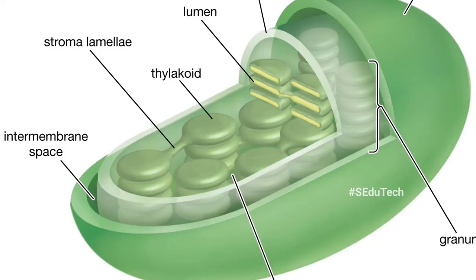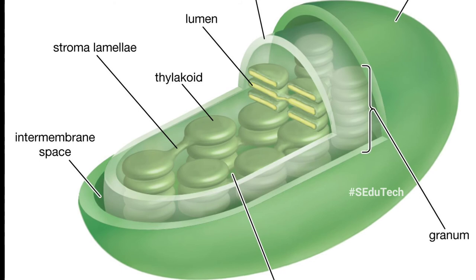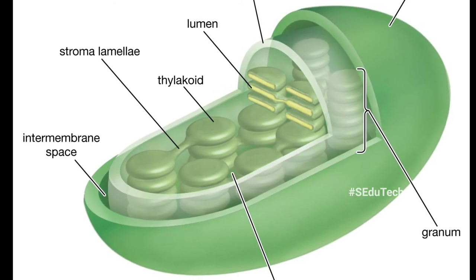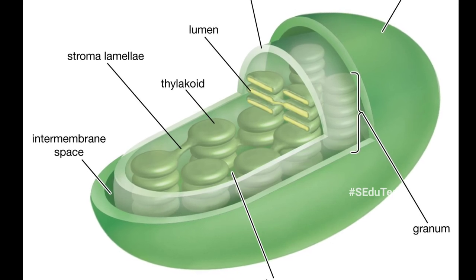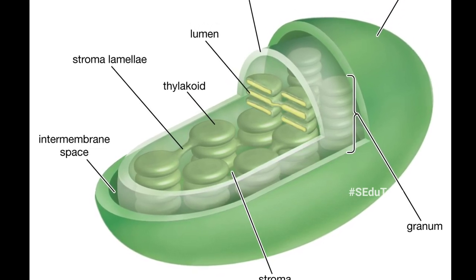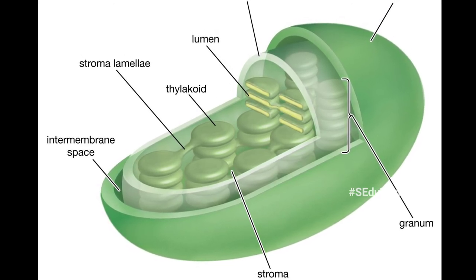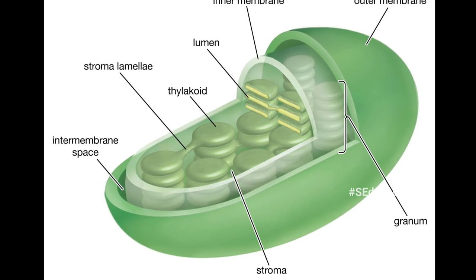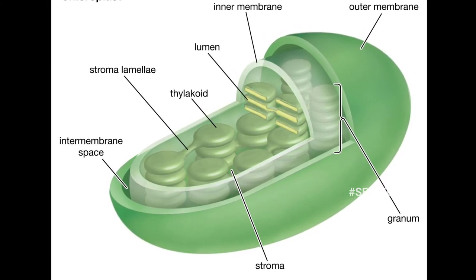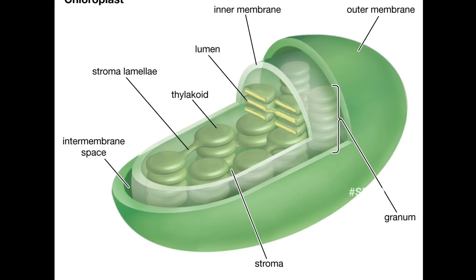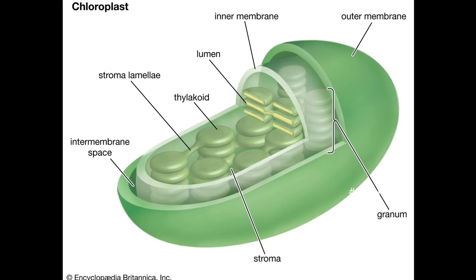Our thirteenth part is chloroplast. Chloroplast contains a green pigment that traps sunlight and converts it into sugar by a process called photosynthesis. The sugars are a source of energy for the plants and the animals that eat them. Chloroplast is a green pigment that converts sunlight into sugar through photosynthesis, and sugar is a source of energy for plants and animals.